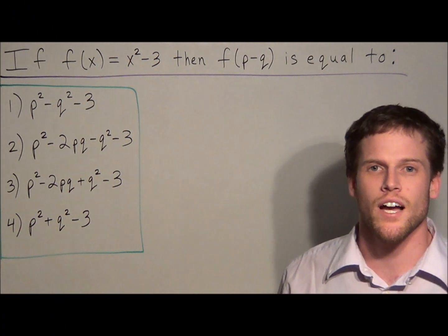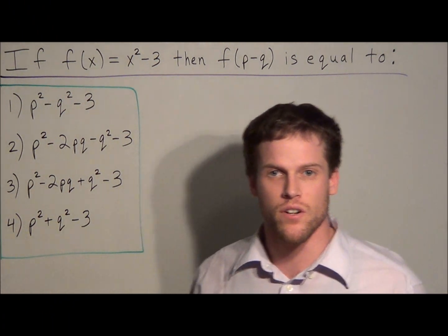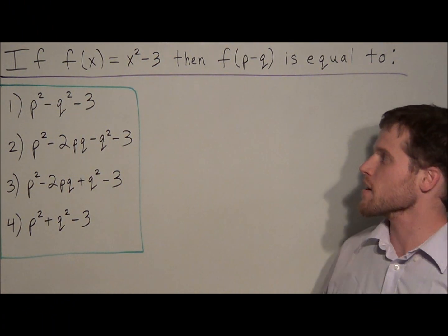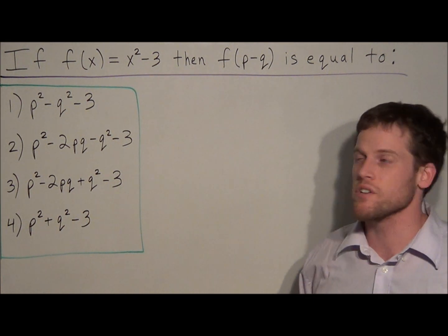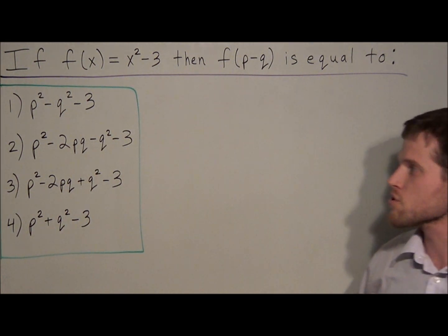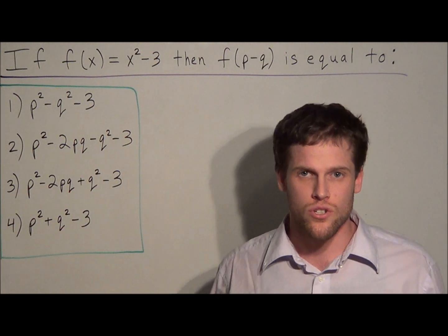Hi, my name is Mr. D, and today I want to take a look at evaluating functions. So we have, if f of x is equal to x squared minus 3, then f of p minus q is equal to, and we have four answer choices to choose from.